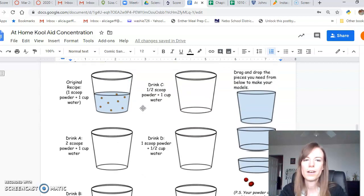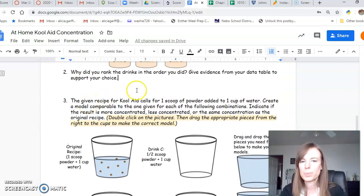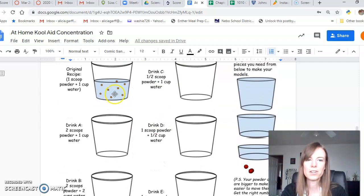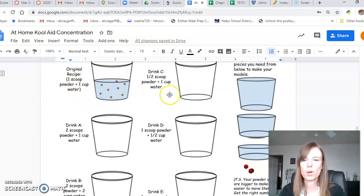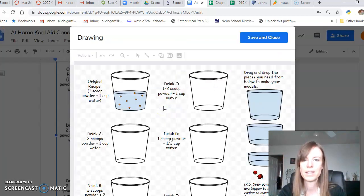It says the given recipe for Kool-Aid calls for one scoop of powder added to one cup of water. Create a model comparable to the one given for each of the following combinations. Indicate if the result is more concentrated, less concentrated, or the same concentration as the original recipe. So what they're saying is here's your original recipe of drink. One scoop we're going to say is equal to one, two, three, four, five, six, seven, eight dots of powder, and then we're going to say one cup of water is this much water.